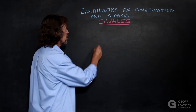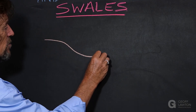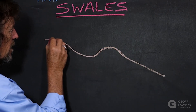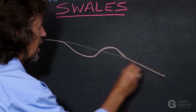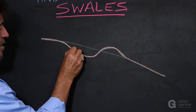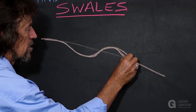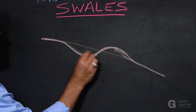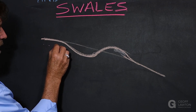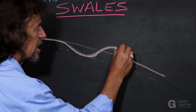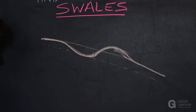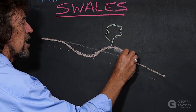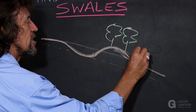Most of the time swales are on slope. There is a mound excavated out from the trench, and the topsoil is increased at the mound, and it's loose. Most of the time we're planting trees up on the mound and just below.